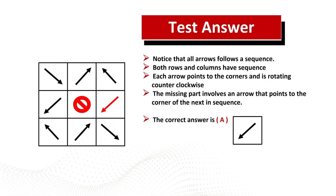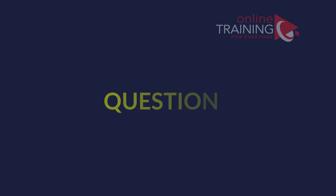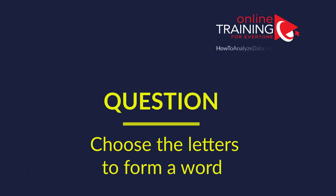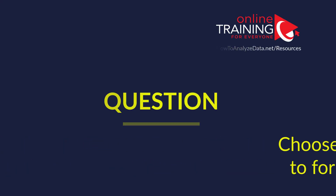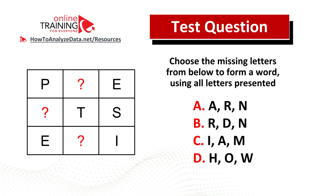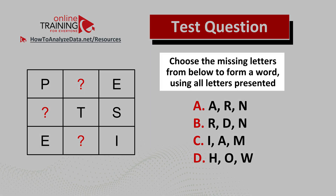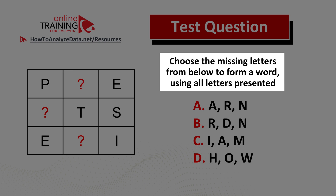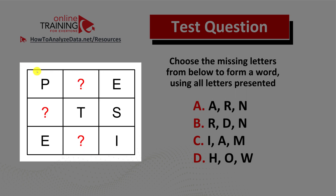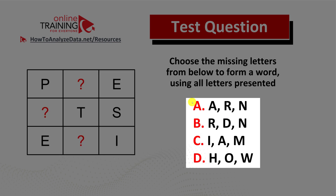Hopefully you've nailed this question and now know how to answer these types of questions on the test. Let's review the question which tests your verbal reasoning skills. Choose the missing letters from below to form a word using all letters presented. You have a 3x3 box which has 3 letters missing. What you need to do is try to form a word and populate the 3 missing letters from 4 choices presented.